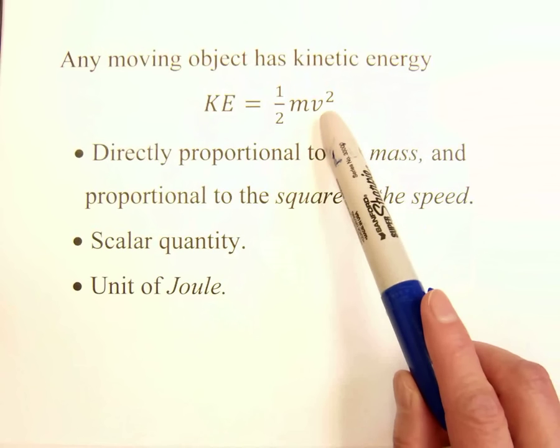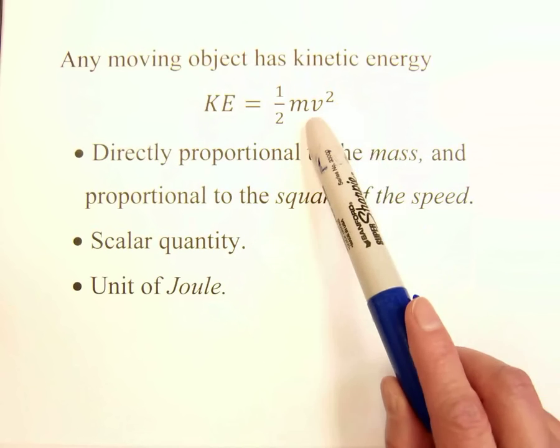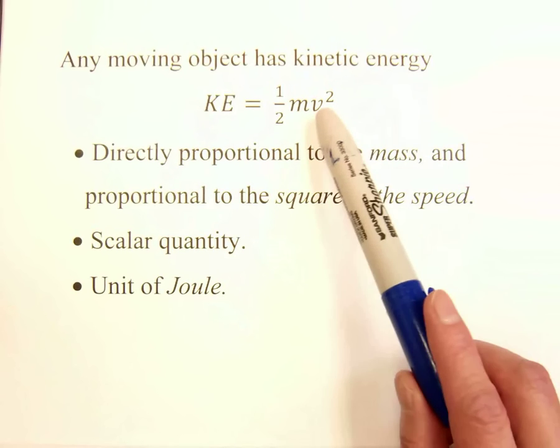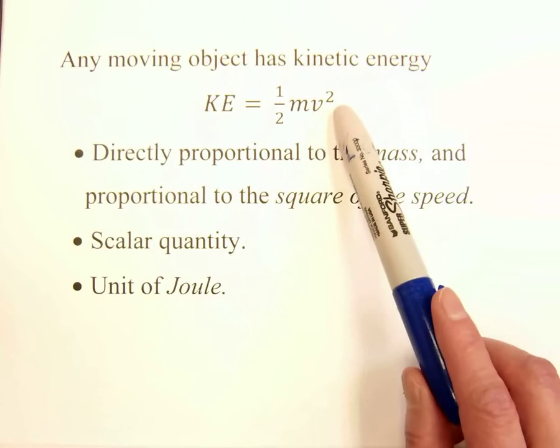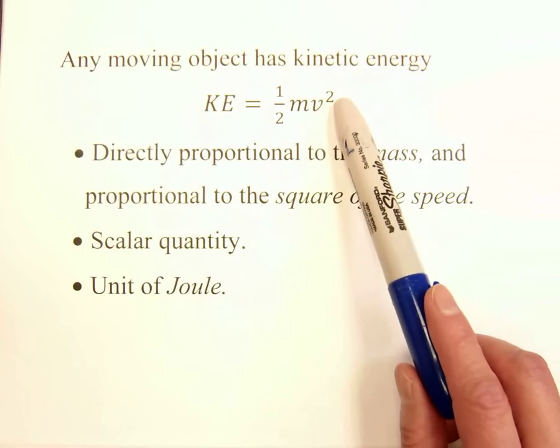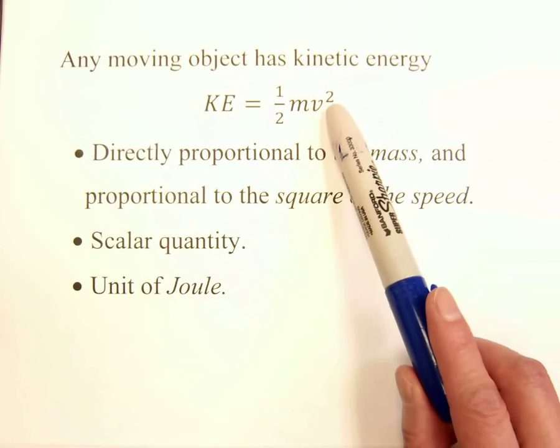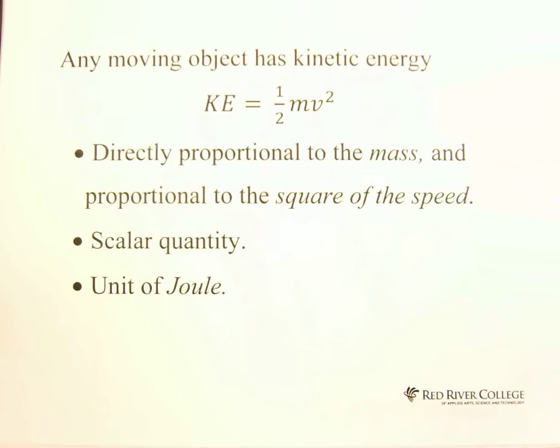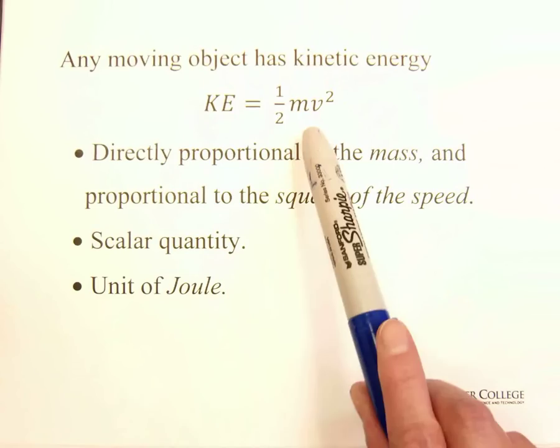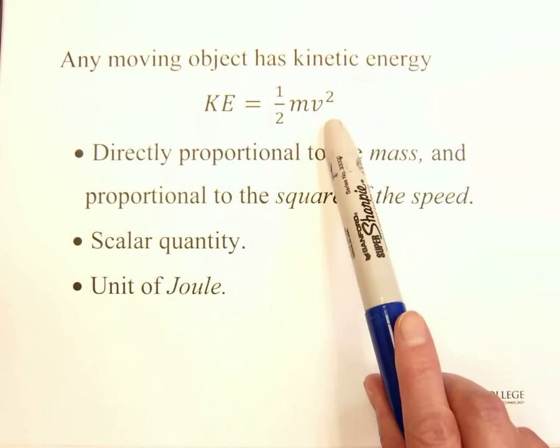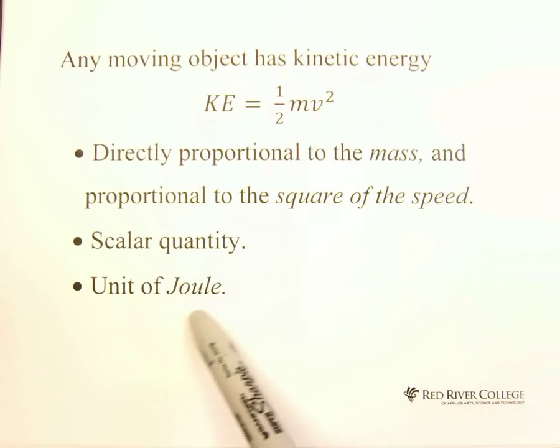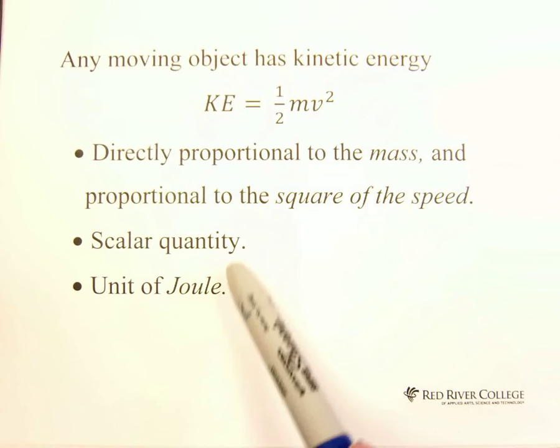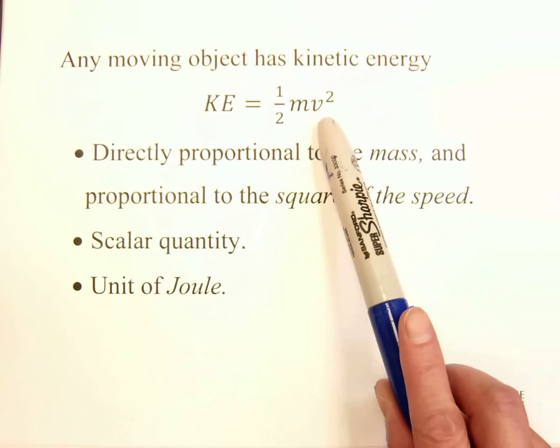Because v squared, v is velocity, but after square there's no negative or positive, always positive. That's why we say the kinetic energy is scalar quantity, so only magnitude, no direction. Unit of joules has the same unit with work.